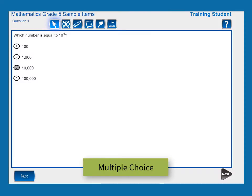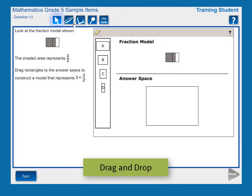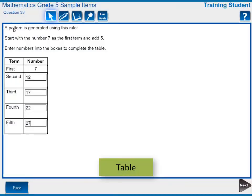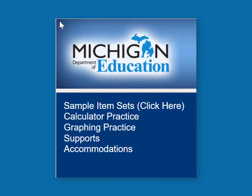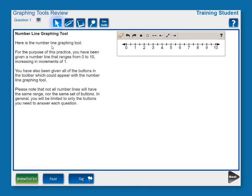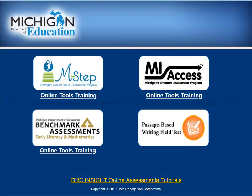Each item type that a student might encounter on the M-STEP Mathematics CAT is represented in the sample item sets. For additional practice, students can access the calculator practice or the graphing practice items, also available through the training tutorials and the online tools training portal.